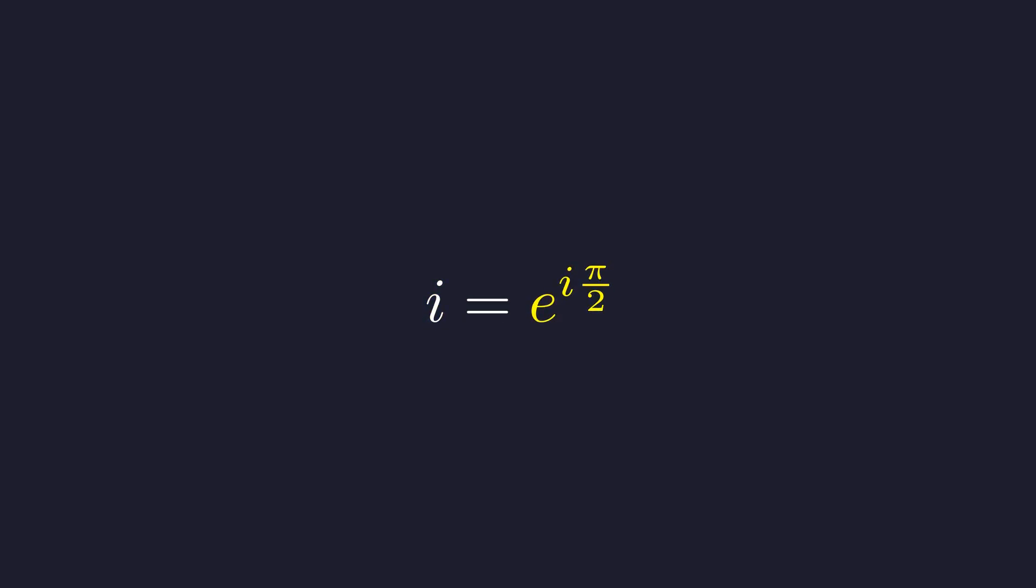But here's the thing. We can add any multiple of 2 pi to our angle and still land on the same point. Full rotations don't change where we end up, so the general form includes these extra rotations, where k is any integer. This multiplicity turns out to be crucial for what comes next.